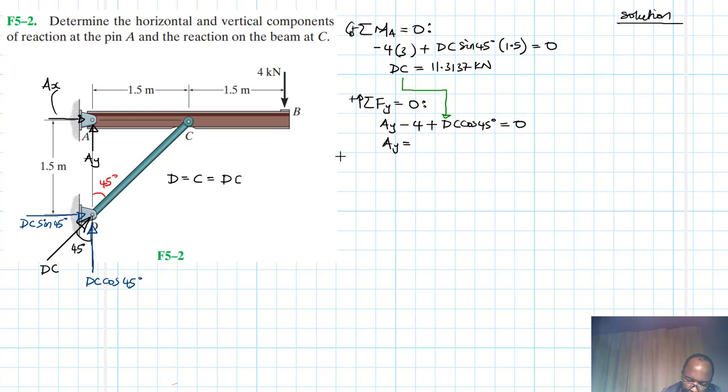And once we do so, we find our AY, which is just equal to, at 11.3137 cos 45 minus 4. So you find that our AY is just equal to, that's one minute, minus 4 plus 11.3137 cos 45. So this gives us AY equal to minus 3.99, which is just 4 kilo newtons.